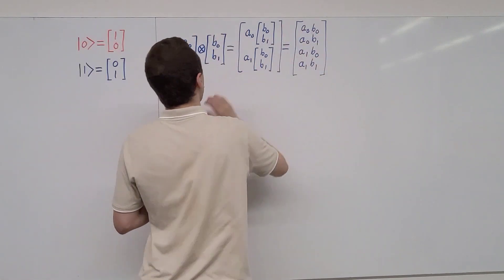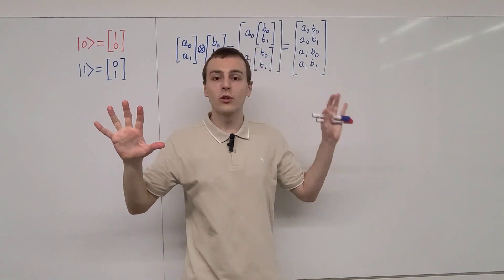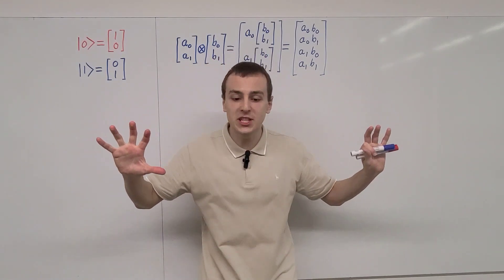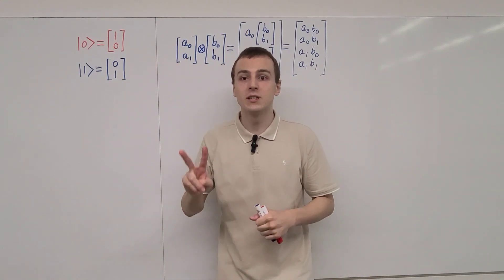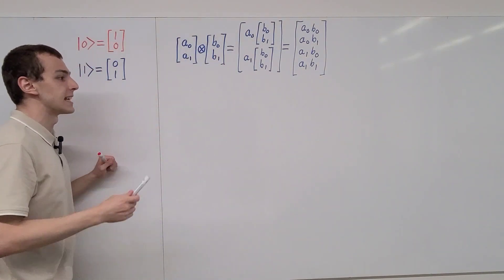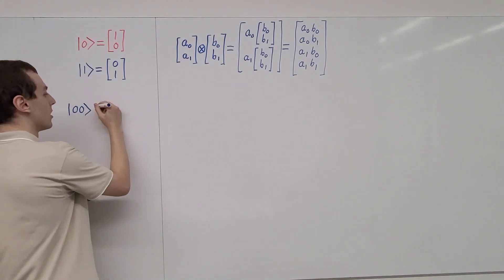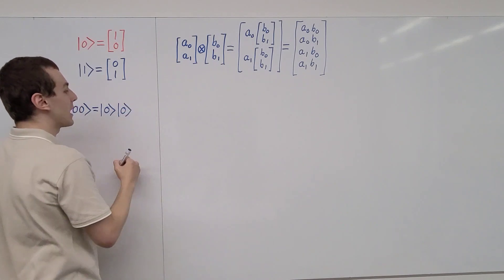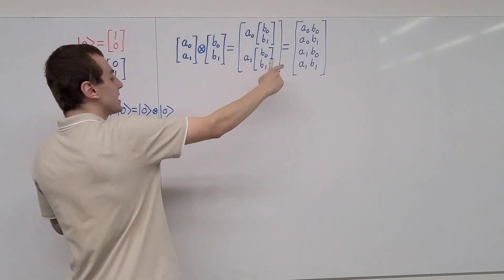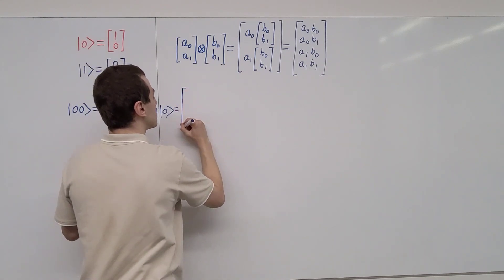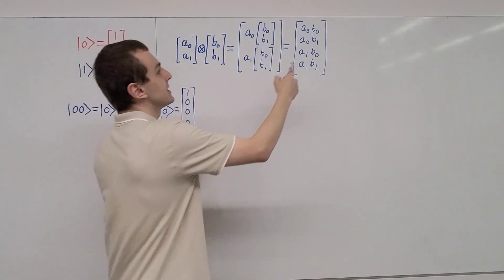Let's use this general definition to combine these orthonormal basis vectors. We have an orthonormal basis for each single-qubit system, and combining them gives us an orthonormal basis for the entire four-dimensional Hilbert space of the two-qubit system. First, let's consider the |00⟩ state. Written inside the ket as 00, this is shorthand for |0⟩ tensor product |0⟩. Using our definition, this gives a column vector with a one in the first entry — the 00 position — and zeros elsewhere: 1, 0, 0, 0.